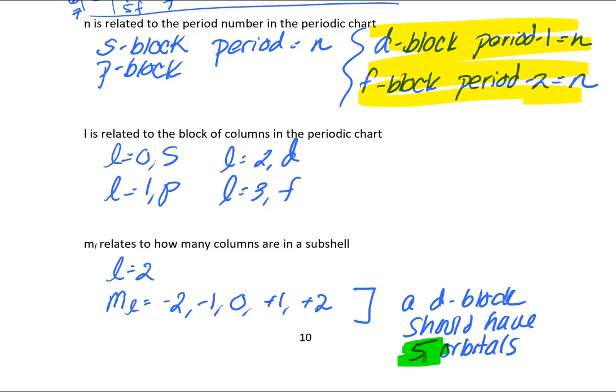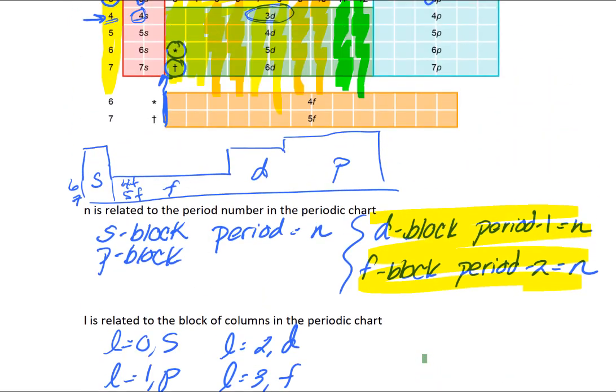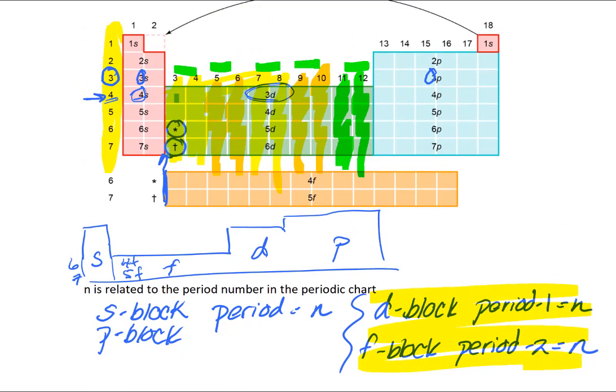Remember that your D block houses 10 electrons, and if we scroll up one more time, if you count, you should have 10 columns in your D block. So there's one, two, three, four, five, six, seven, eight, nine, 10, because your D block can house 10 electrons. So what you're going to start to see is it all just fits together really beautifully.